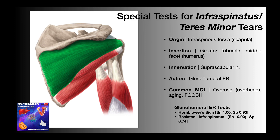On the left here in green, we see the infraspinatus. This muscle originates in the infraspinous fossa of the scapula, and then this convergent muscle narrows down to a tendon which inserts on the greater tubercle of the humerus, specifically the middle facet. This muscle is innervated by the suprascapular nerve, which also innervates the supraspinatus that sits atop the scapula. The action of infraspinatus is glenohumeral external rotation, sometimes called shoulder external rotation.